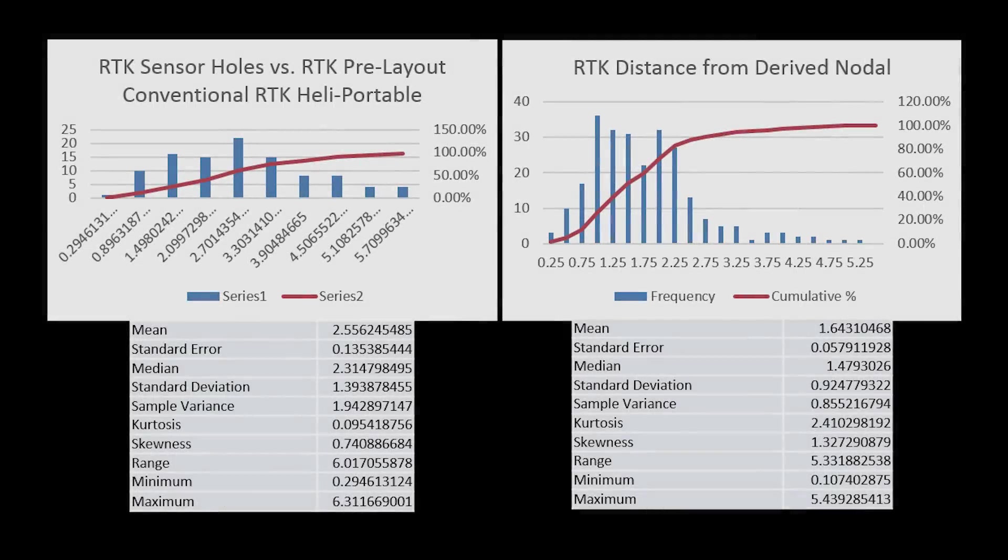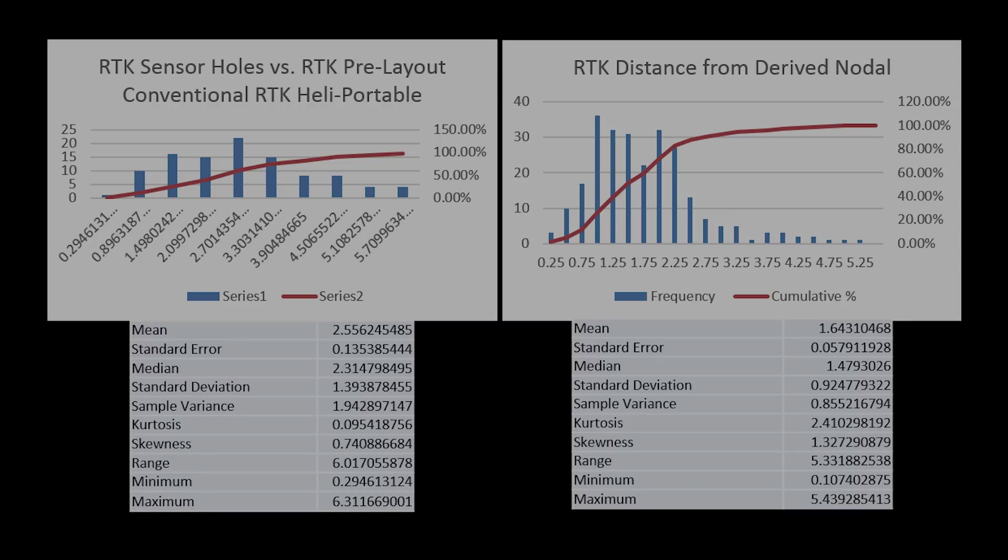These data show very clearly that the standard error for the derived nodal positions is much smaller than the error for the conventional method. We see a mean value here of approximately 1.6 meters, whereas on the conventional method, it's almost a meter higher, and that conforms with our expectation given our understanding of conventional survey methods.